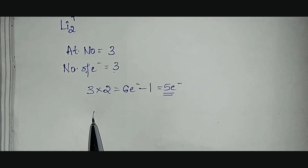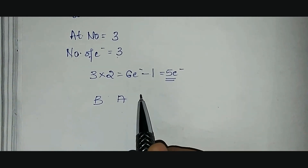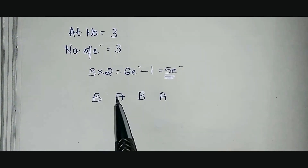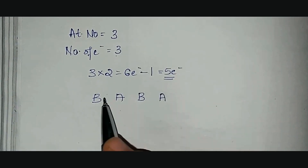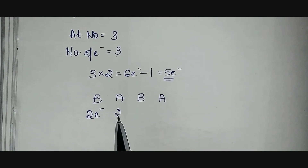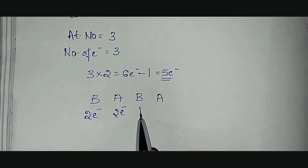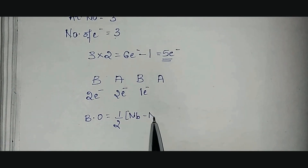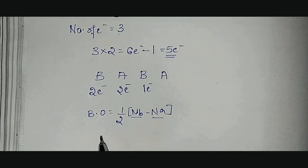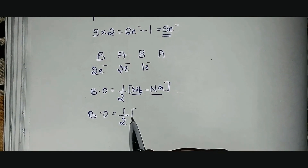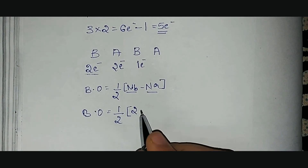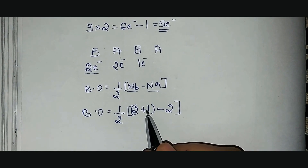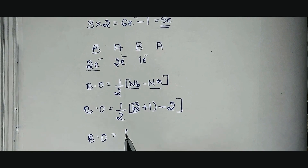We have 5 electrons to distribute across the orbitals in order: bonding, antibonding, bonding, antibonding. Each orbital holds 2 electrons. We place 2 in the first bonding orbital — 3 remaining. Then 2 in the antibonding orbital — 1 remaining. That last 1 electron goes to the next bonding orbital. The bond order formula is: BO = ½ × (NB − NA). Bonding electrons: 2 + 1 = 3. Antibonding electrons: 2. So bond order = ½ × (3 − 2) = ½ × 1 = ½. The bond order of Li₂⁺ is 0.5.